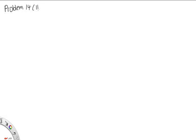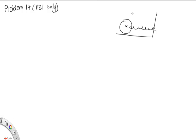Problem 14 — a 1131-only problem. We have a cylinder attached by a spring to the wall; the spring has spring constant K = 2.94 N/cm. The cylinder rolls without slipping along the surface, and when released, the spring is stretched by 23.9 cm — that's how far it is from its equilibrium position.